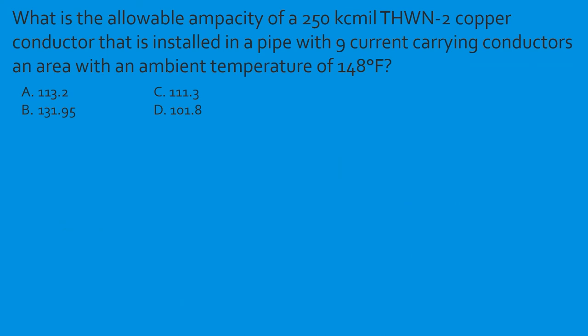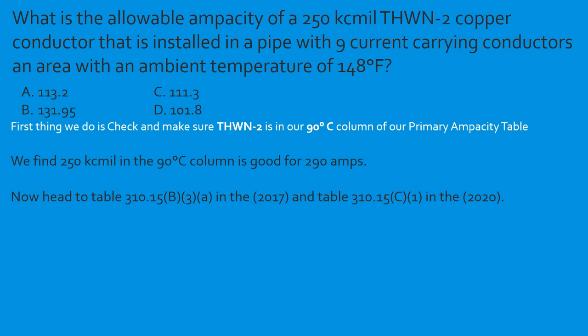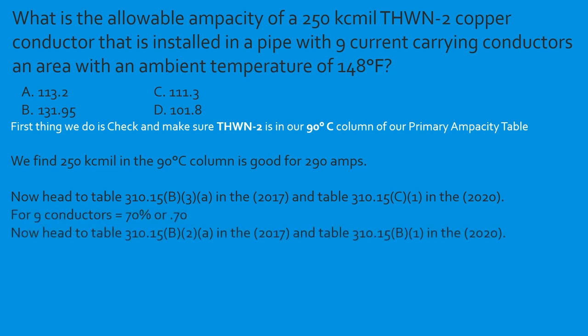Question: What is the allowable ampacity of a 250 kcmil THWN-2 copper conductor installed in a pipe with nine current-carrying conductors at an ambient temperature of 148°F? Confirm insulation is in the 90°C column. 250 kcmil is good for 290 amps in the 90°C column. Nine conductors — bundling adjustment factor is 0.70. Temperature at 148°F — correction factor is 0.65. So: 290 × 0.70 × 0.65 = 131.95 amps. Select B.